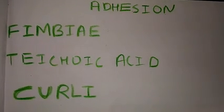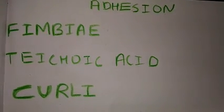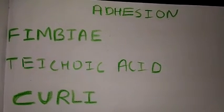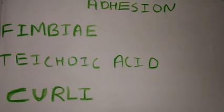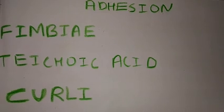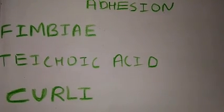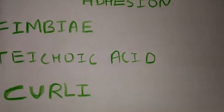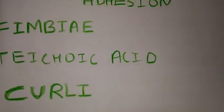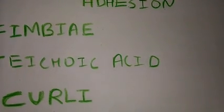Teichoic acid is shown by Streptococcus and Staphylococcus. Some strains of E. coli and Salmonella have surface proteins called Curly, which bind to the endothelium and to extracellular proteins such as Fibronectin, and to serum proteins such as Factor 12. They play a very important role in DIC. Remember: Salmonella and E. coli have Curly.